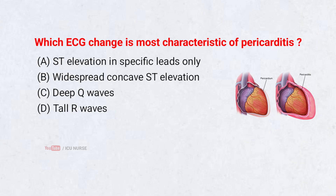Which ECG change is most characteristic of pericarditis? A. ST elevation in specific leads only, B. Widespread concave ST elevation, C. Deep Q-waves, D. Tall R-waves. Correct answer: B. Widespread concave ST elevation.